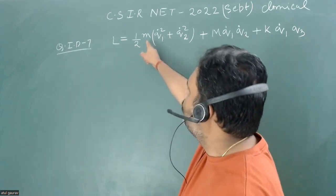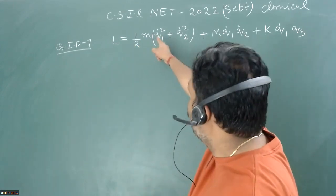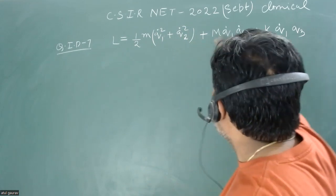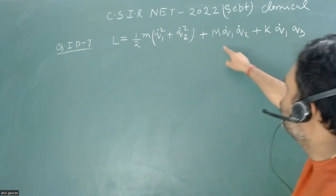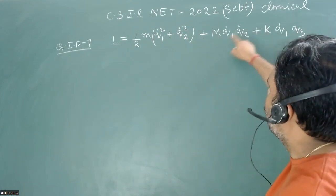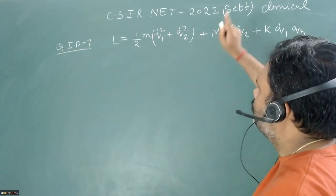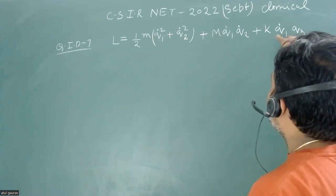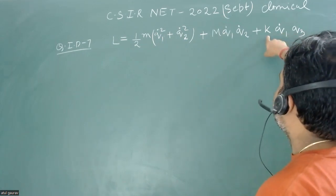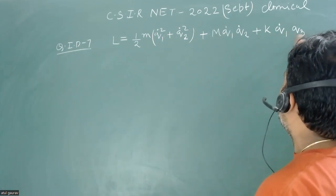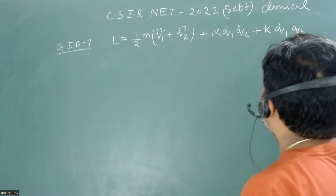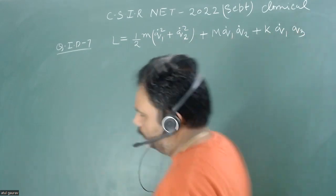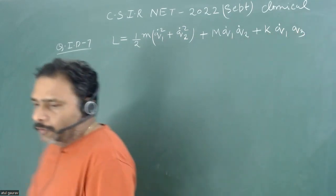We have (1/2) m times Q1-dot squared and Q2-dot squared, plus a coupling term of Q1-dot and Q2-dot with some constant capital M, and the last term is very interesting: K times Q1-dot and Q3. So we have to take care of all these terms.